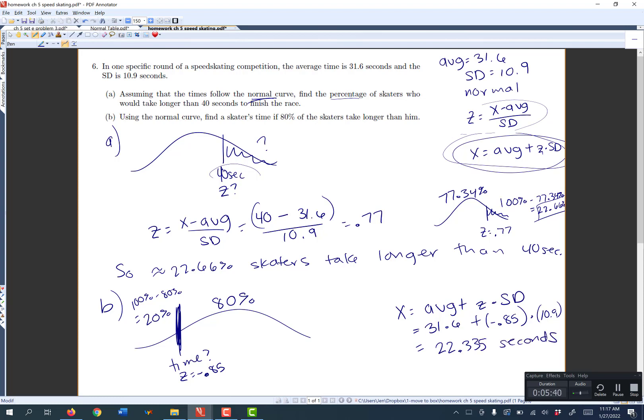If you picked a different z value, that's okay. You should be close to me. It's okay if you're not exactly the same. So that tells me that a skater that takes 22.335 seconds is going to be faster than 80% of the other skaters. I say faster because he's taking less time. So 80% of the people will take more time than he did.